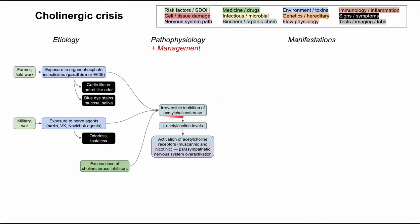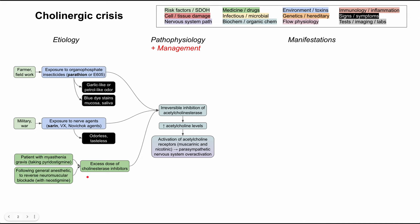Other things can cause inhibition of acetylcholinesterase. Medications that do this intentionally, if taken in excess, can produce this toxidrome. Two cases worth knowing: patients with myasthenia gravis take pyridostigmine for symptom management, and an overdose can cause a cholinergic crisis. Additionally, in an iatrogenic setting following general anesthesia, neostigmine is used to reverse neuromuscular blockade — giving a much higher dose than warranted for the patient's body weight can also produce this cholinergic toxidrome.